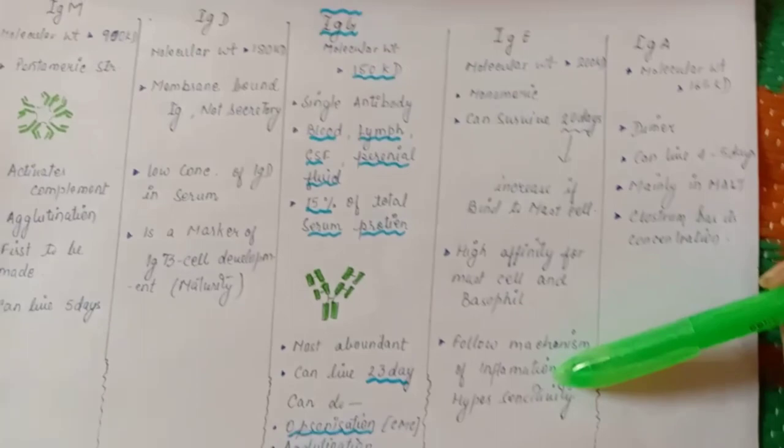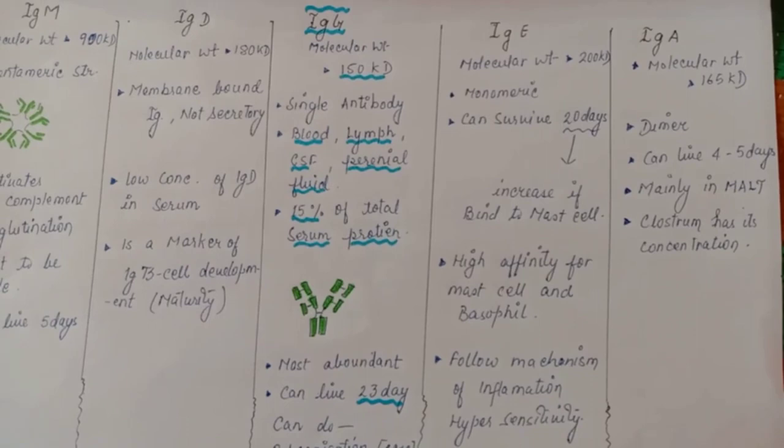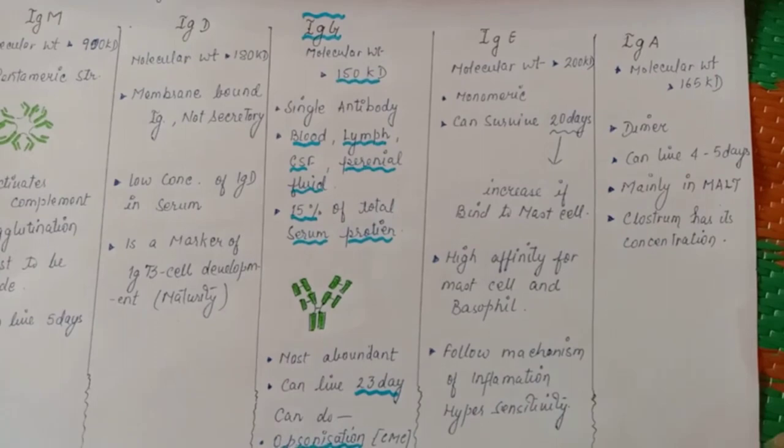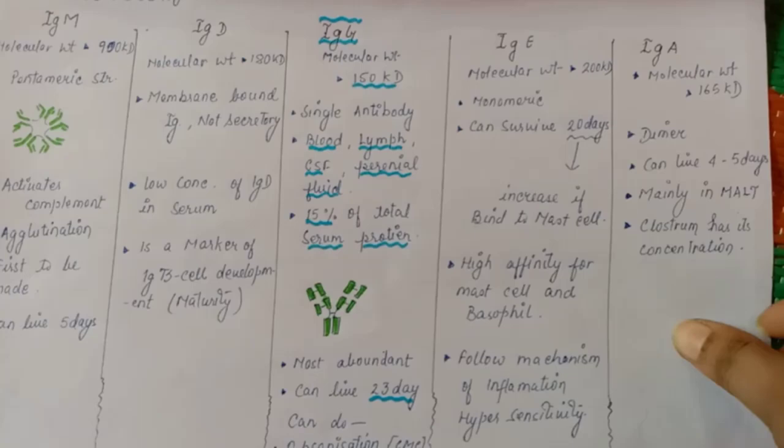Now IgA. The unique feature is it is mainly associated with mucosa-associated lymphoid system and in the colostrum it is found. So from mother it could pass to the baby through breastfeeding.